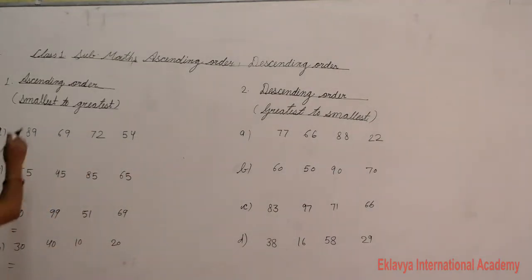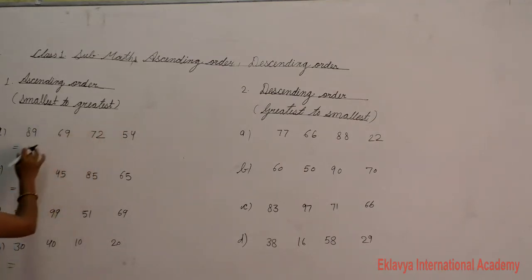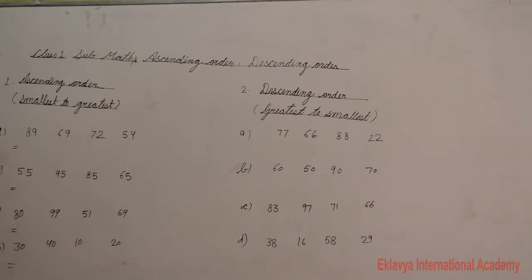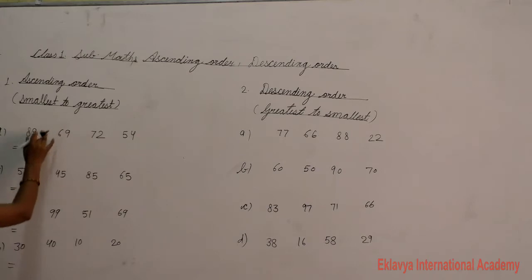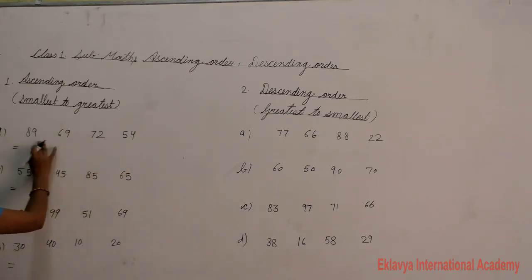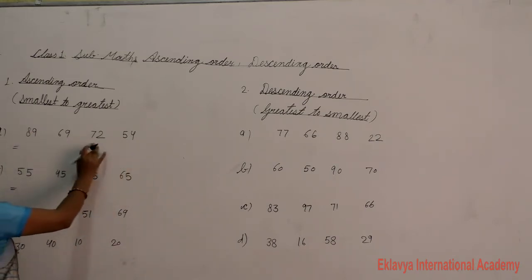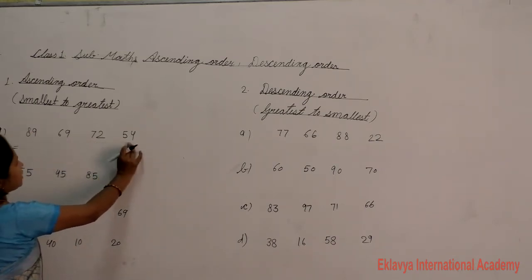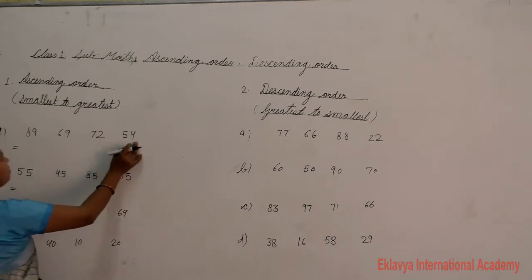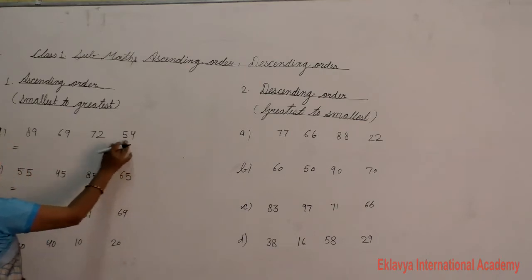Now let's start with smallest to greatest — ascending order. Look at the numbers: 89, 69, 72, and 54. We choose the smallest number first. The smallest number is 54.